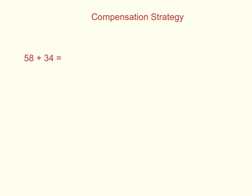Let's try the compensation strategy with another example: 58 plus 34. When I think about those numbers, 58 is very close to the friendly number of 60. If I add 2 more to 58, I can jump to that friendly number of 60.